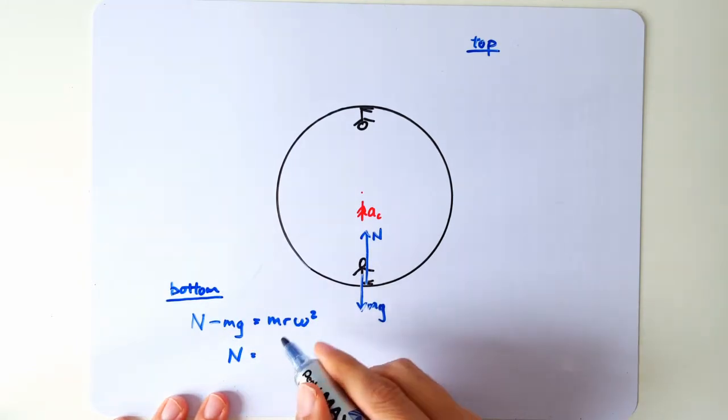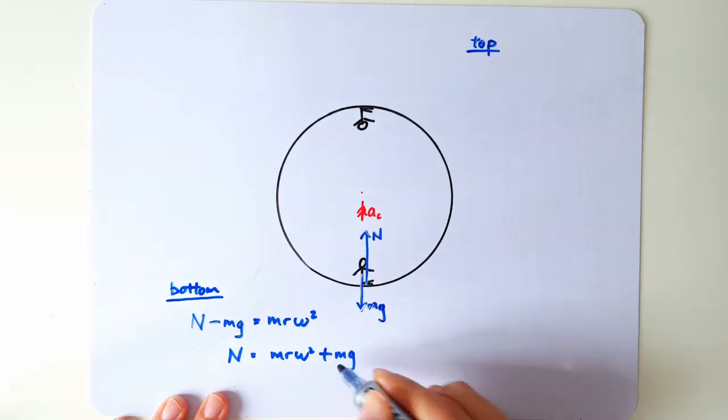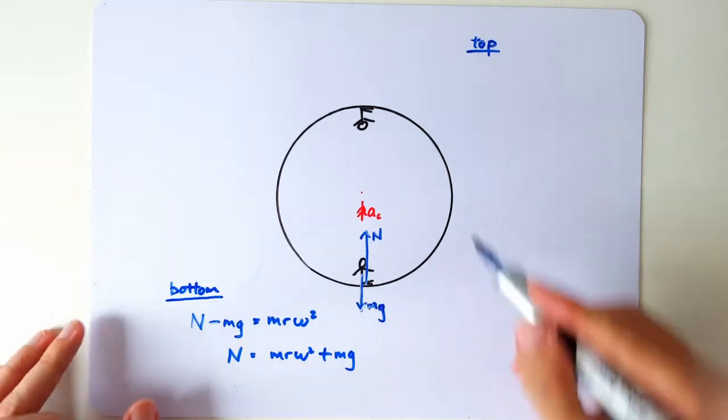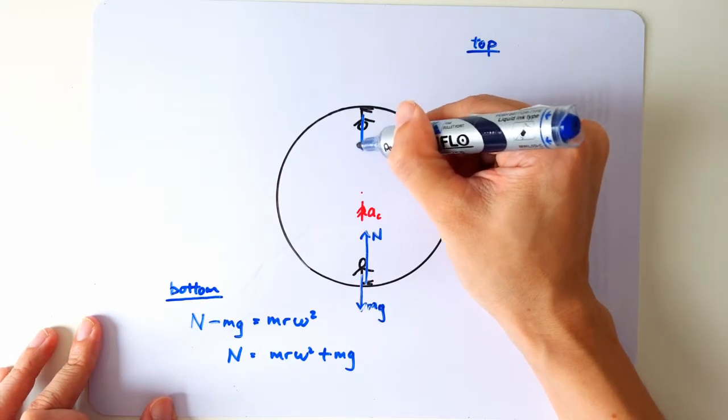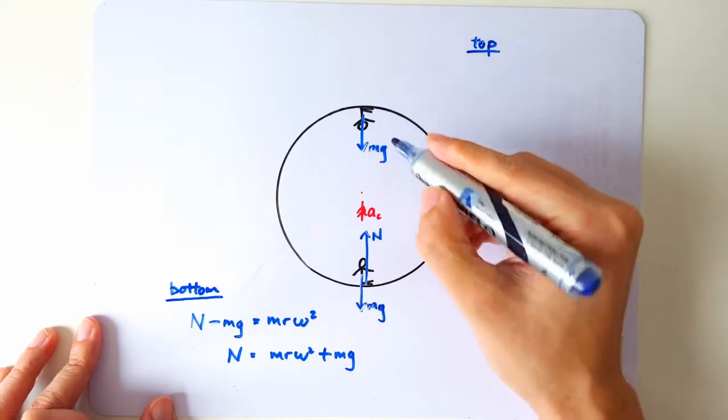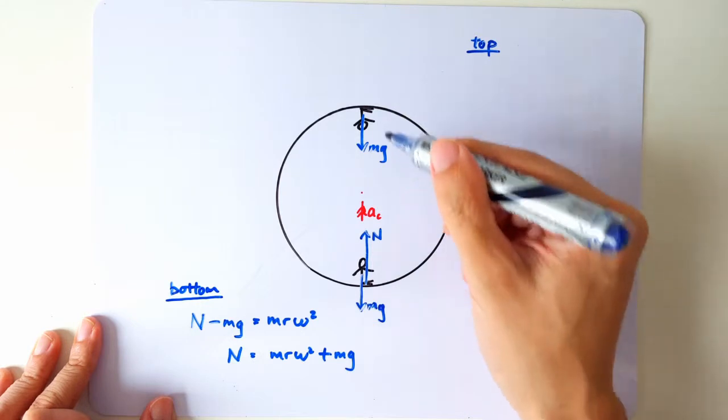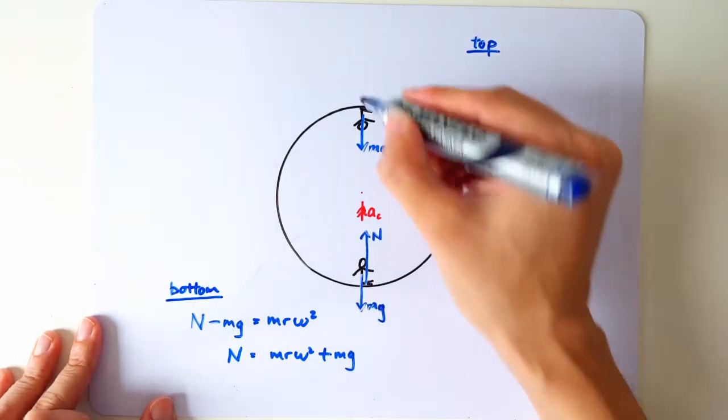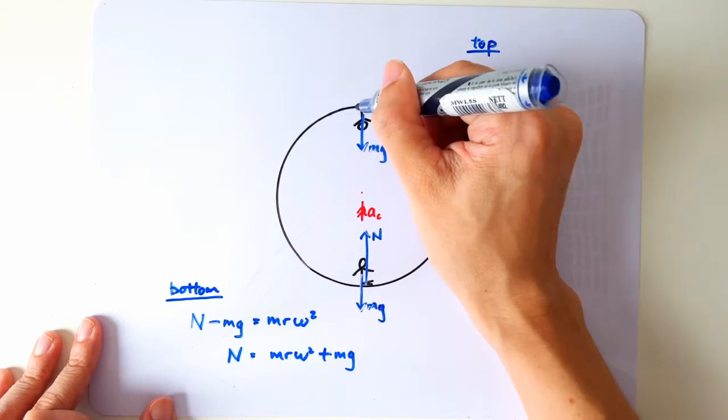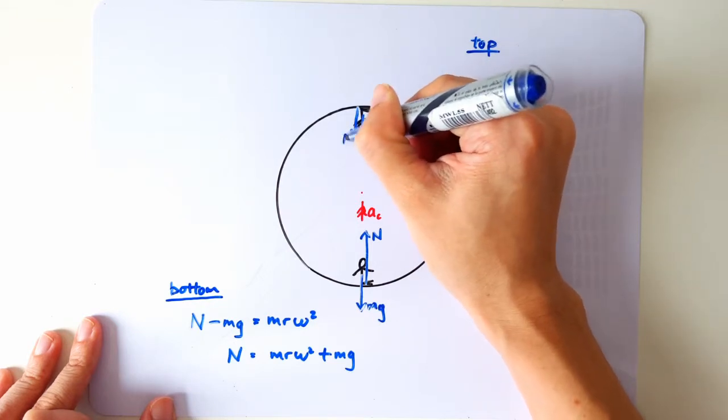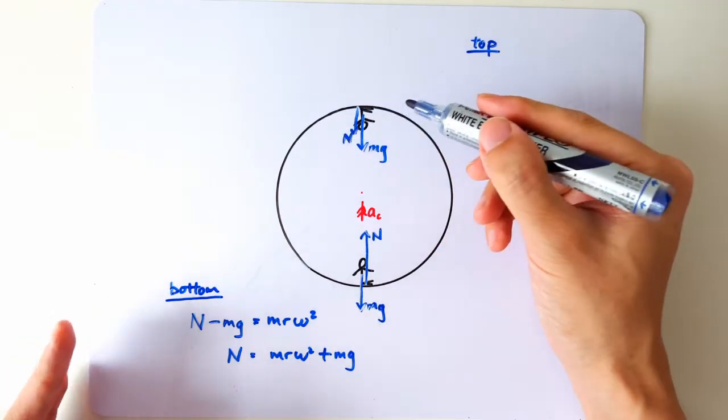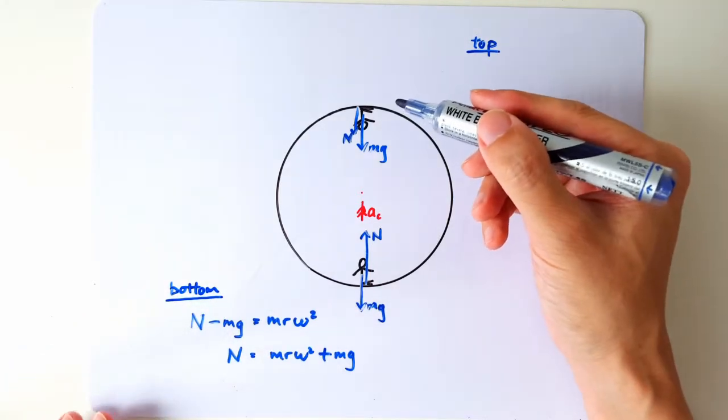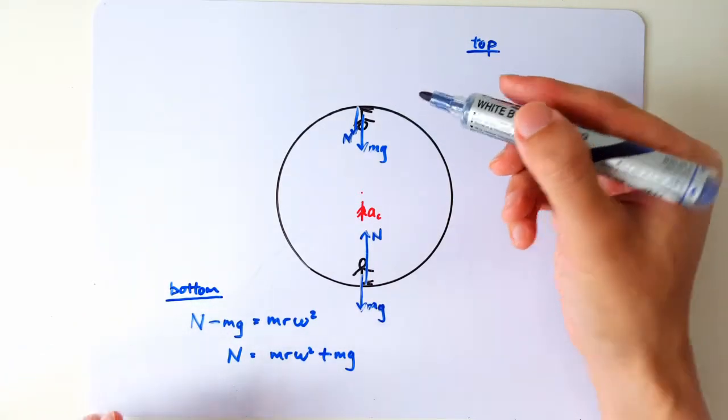When you're at the top, the Earth is still pulling you downward with exactly the same force of mg. There's no difference whether you're at the top or at the bottom as far as gravitational force is concerned. The normal contact force will still be downward because it sounds like it's just a floor; the floor can only push you away from it, so the normal contact force is also downward.